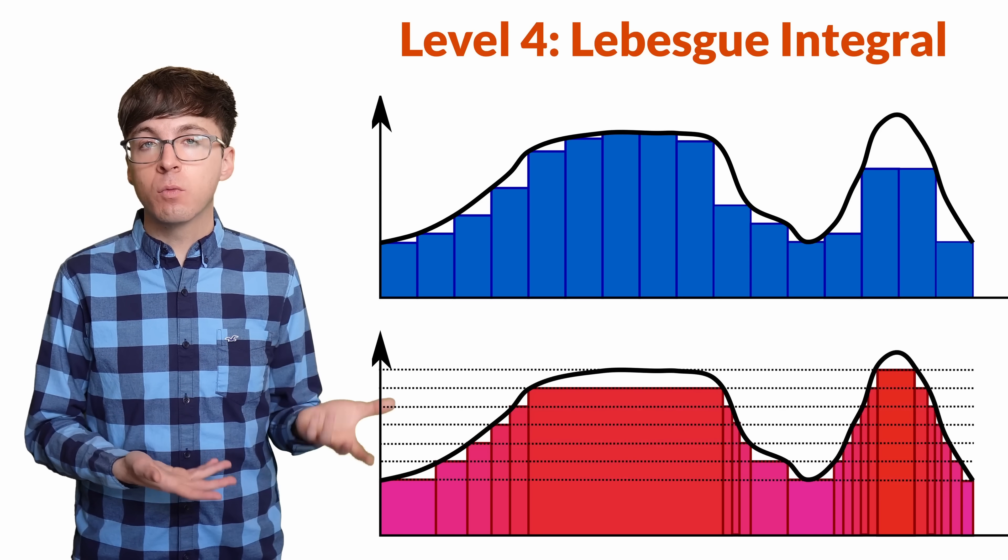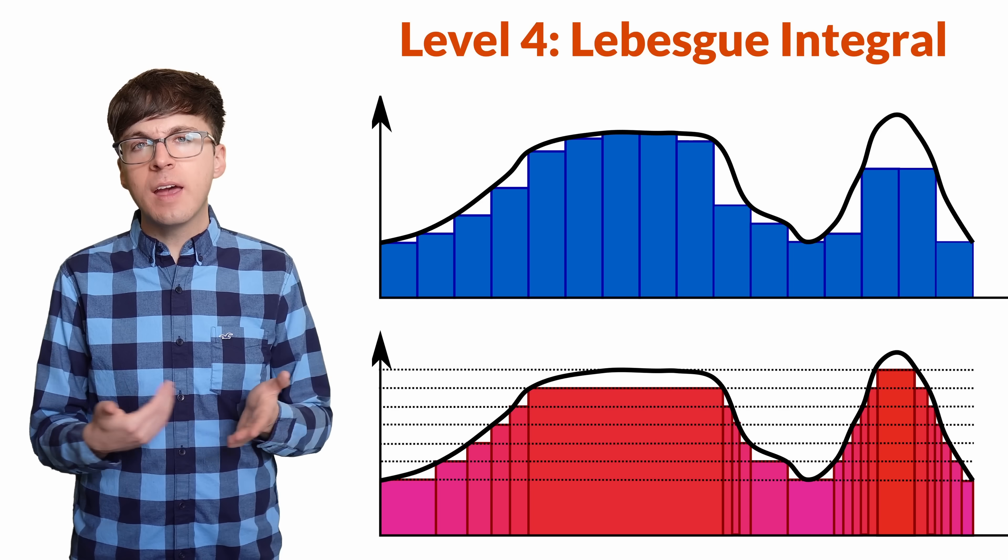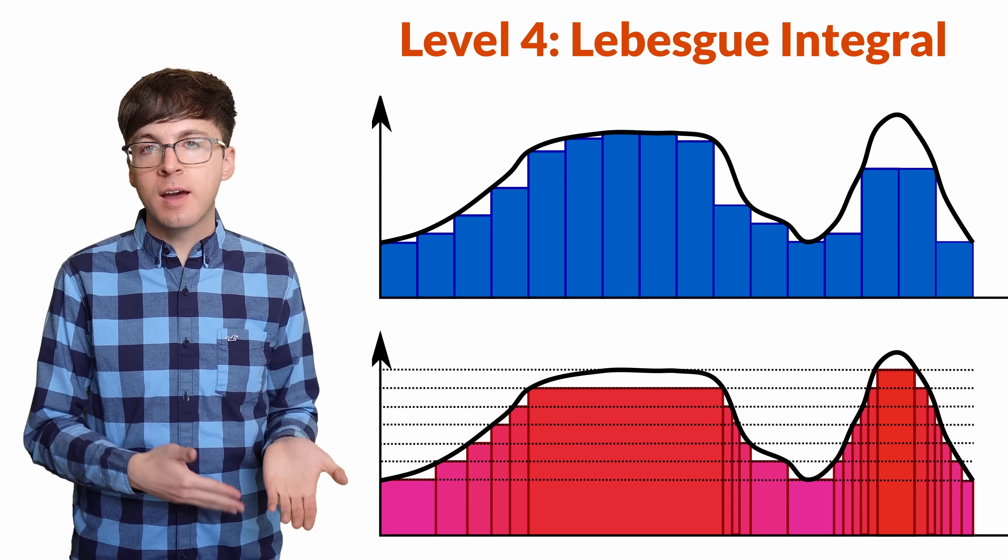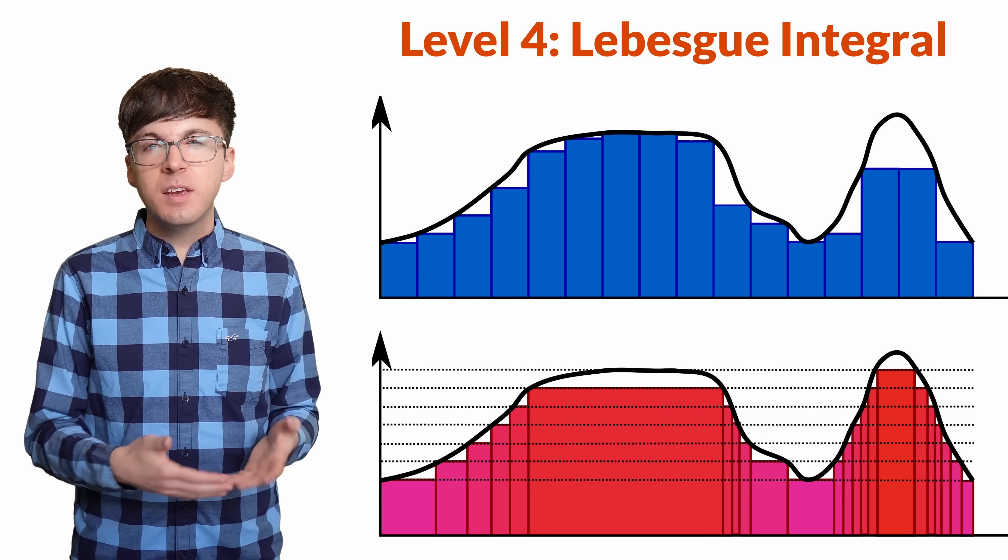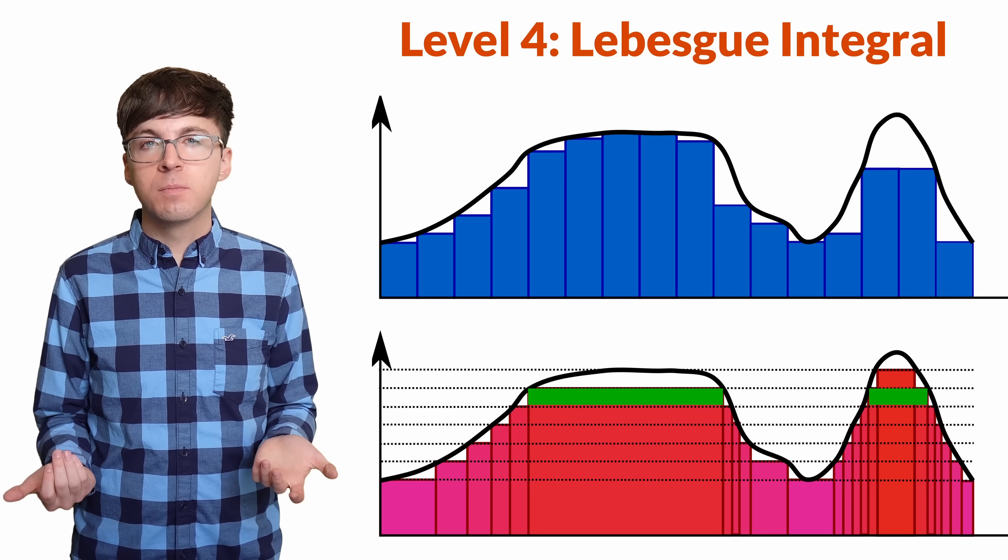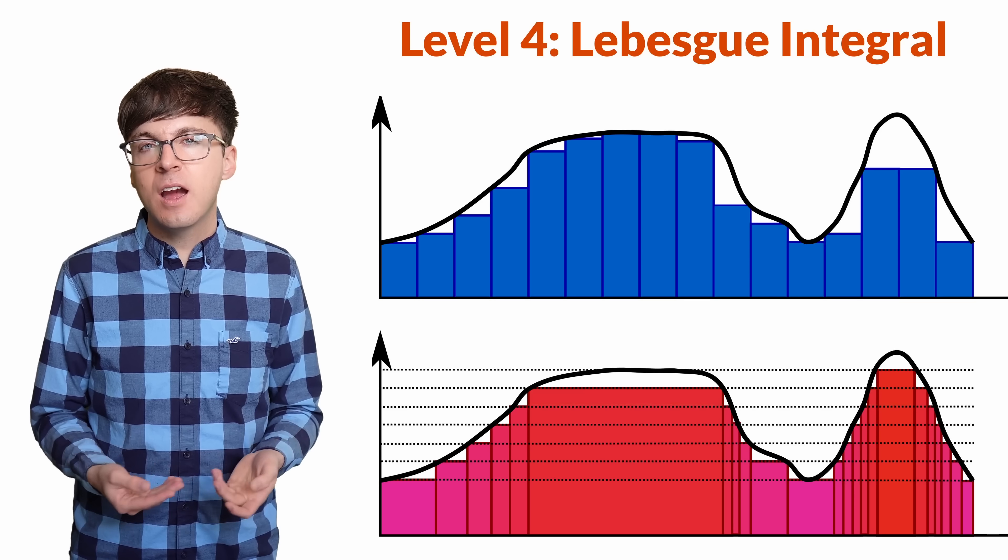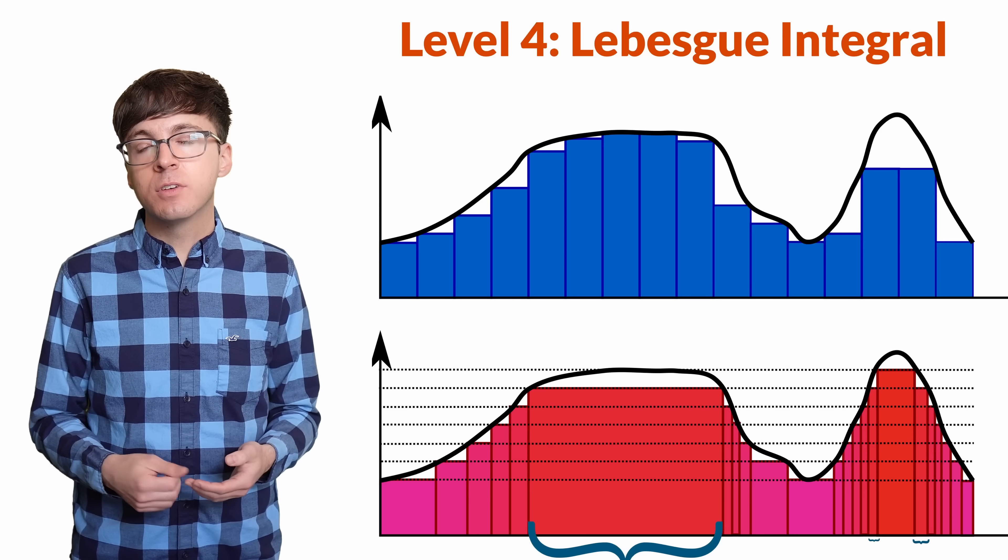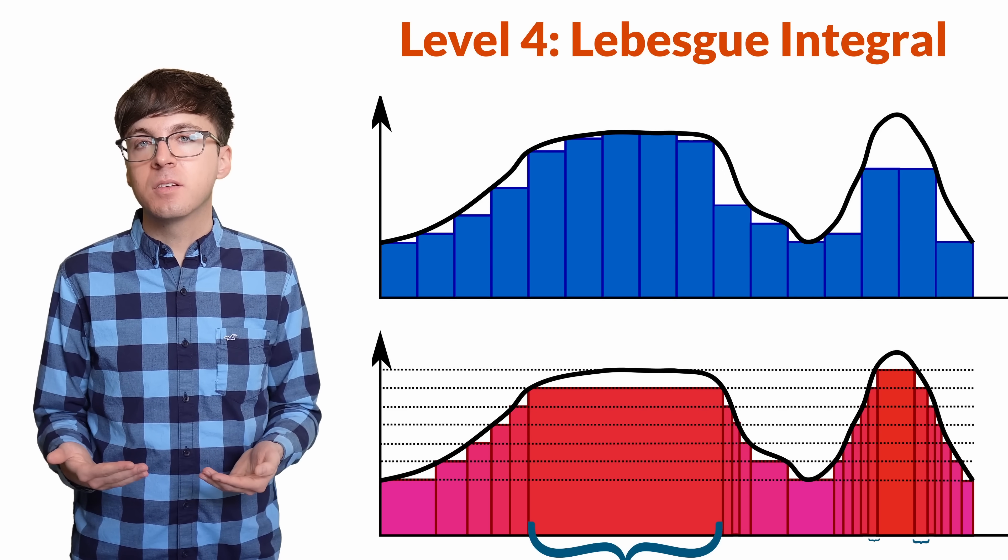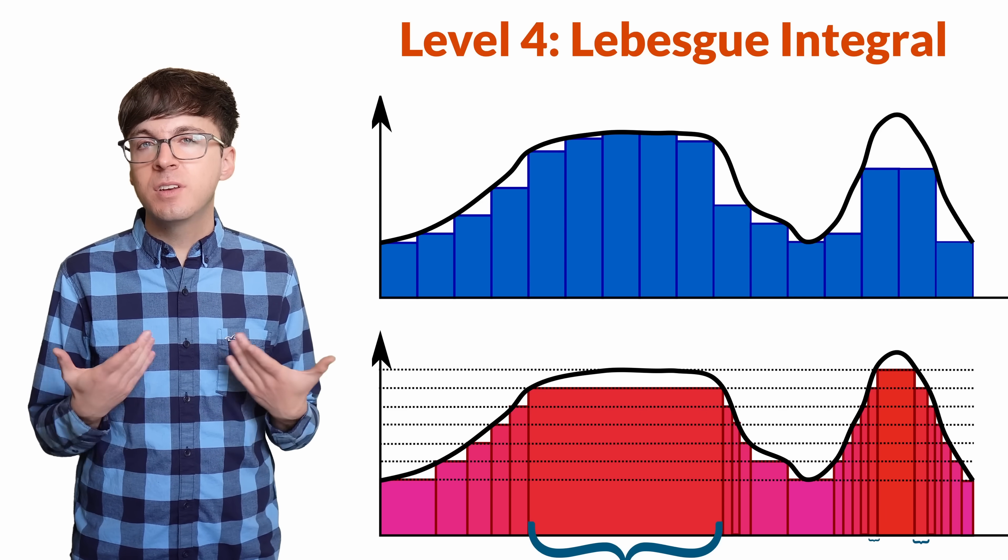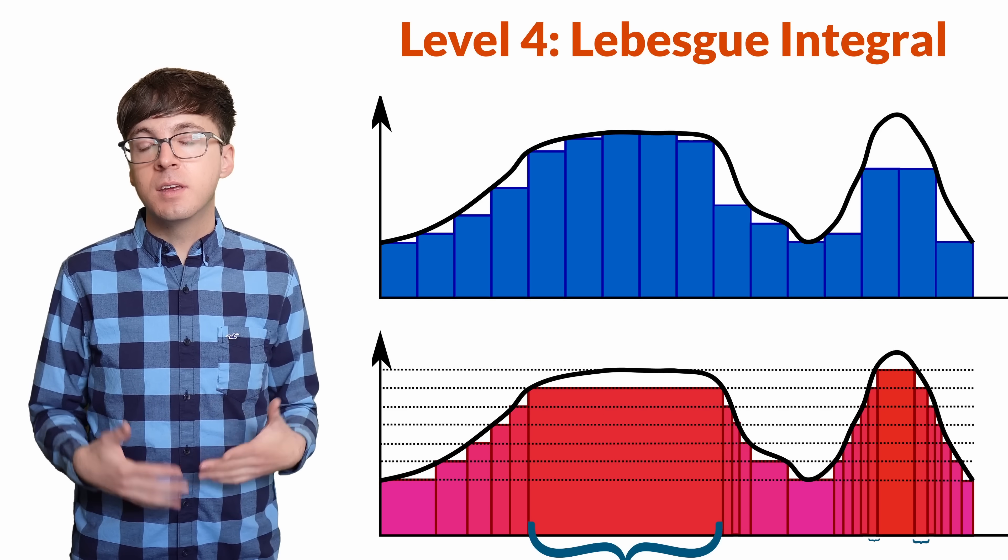But we can do this the other way. Let's create a partition of the range. Then we'll see which x values correspond with that part of the range. This is like creating a horizontal rectangle. We've looked at the whole function and organized it into parts based on its value. Now, we multiply the length of that region of the x-axis by the height. Then we take a limit as the partition gets finer and finer to get the Lebesgue integral.